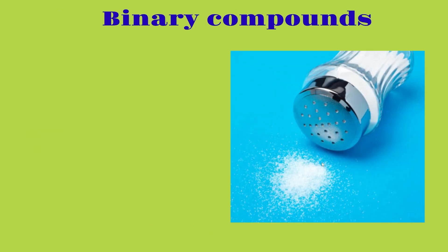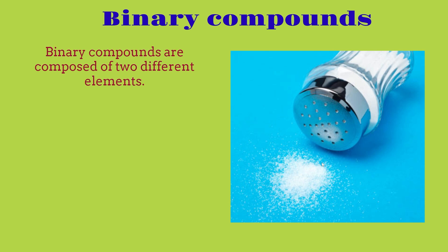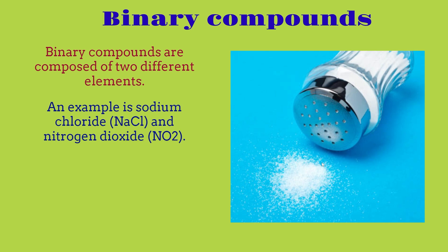The first thing we're going to talk about is what binary compounds are in general. Binary compounds are composed of two different elements. An example of this could be sodium chloride and also nitrogen dioxide. Sodium chloride is NaCl, meaning it's combined with sodium and chloride — two different elements. For nitrogen dioxide, it's nitrogen and oxygen, also two different elements. So binary compounds are basically just two different elements combined together.